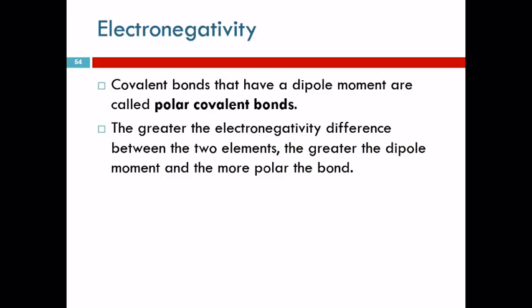So a covalent bond where electrons are shared but not equally has a dipole moment, and those bonds are called polar bonds because the ends of the bond are not the same charge-wise. One is more negative and one is more positive. The greater the electronegativity difference between the two elements, the greater the dipole moment, the more polar the bond. The bigger the difference between the amenities at those two little boys' houses, the bigger the difference in how much time they spend at each house. If the houses were the same, they'd probably go back and forth equally. Does that make sense?